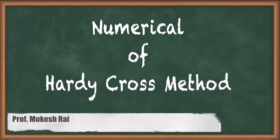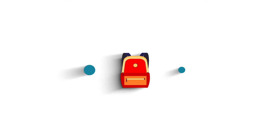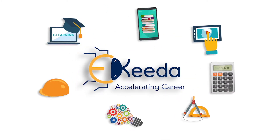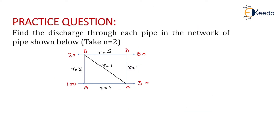Hello students, today we are going to discuss a numerical of the Hardy Cross method. The question is: find the discharge through each pipe in the network shown below, take the value of n equals to 2. Various discharges are shown in the diagram: 100, 20, 50, and 30. Various values of R for different pipes are: R equals 2 for pipe AB, R equals 1 for pipe BC, R equals 5 for BD, R equals 1 for CD, and R equals 4 for AC.